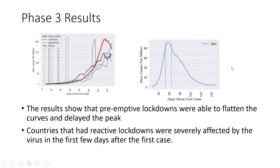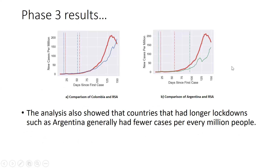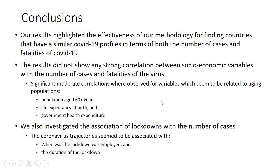Countries that took a more reactive approach to lockdowns experienced an early peak, as seen in the examples shown here. Another finding is that there appears to be an association between the number of cases and the length of the lockdown. Comparing South Africa and Colombia with Argentina — Argentina had a longer lockdown and the number of cases did not rise as astronomically as in South Africa and Colombia.